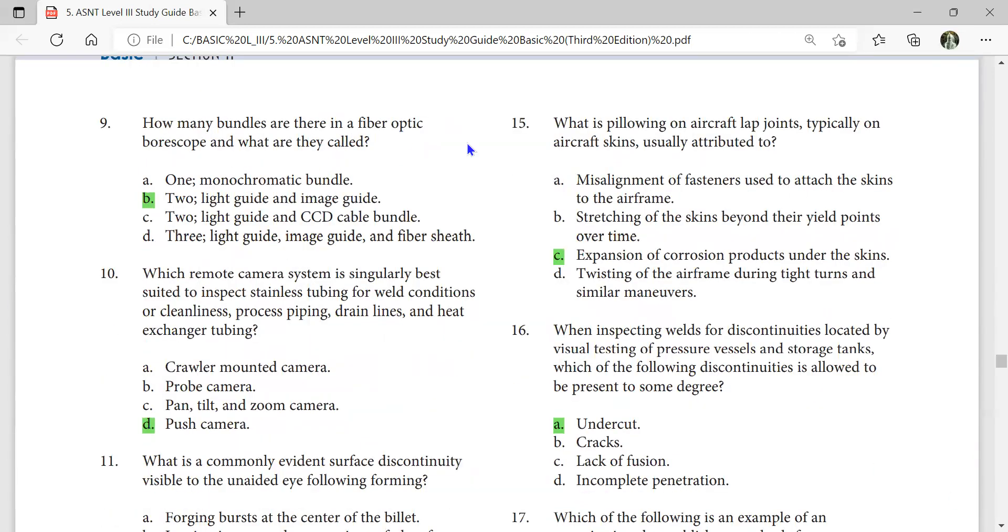How many bundles are there in a fiber optic boroscope and what are they called? Two: light guide and image guide.